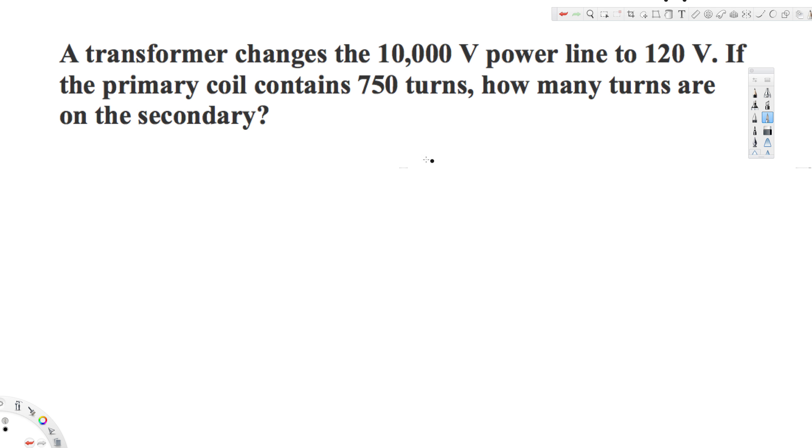Now to find this one out, we can use a relationship between the ratio of the voltage and the ratio of the turns. That's given by Vp over Vs, that's equal to Np over Ns.